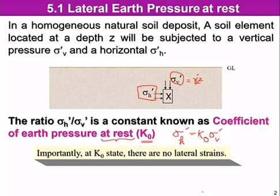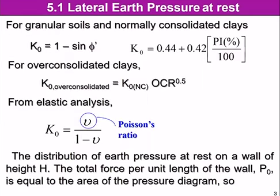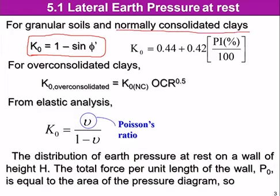To find K0 in the case of granular soil or normally consolidated clay, we can find the value of K0 from the equation 1 minus sin(φ'), where φ' is the internal friction angle under drained conditions. For normally consolidated clay, we can also estimate from the PI value using this equation. If we know the φ value, we can use both granular soil and normally consolidated clay. But for clay, if we don't know the φ value, we can estimate it.